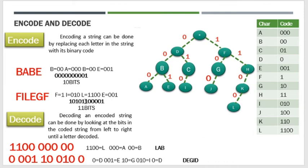Next, ituturo ko sa inyo yung decoding. Pag sinabi nating decoding, mula sa binary papunta ng string — base pa rin sa tree. Let's say for example ito yung given na binary: 1-1-0-0-0-0-0-0-0. Ang gagawin — kagaya lang din siya ng encoding, kabaligtaran lang — kukunin ninyo yung equivalent na character base sa tree.